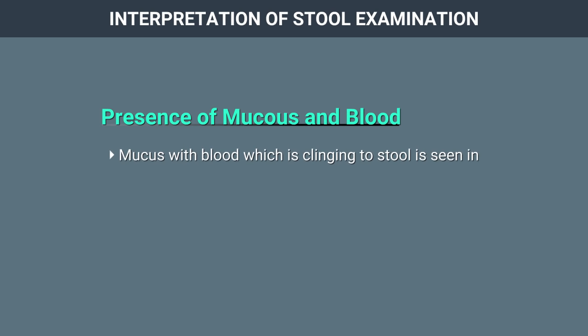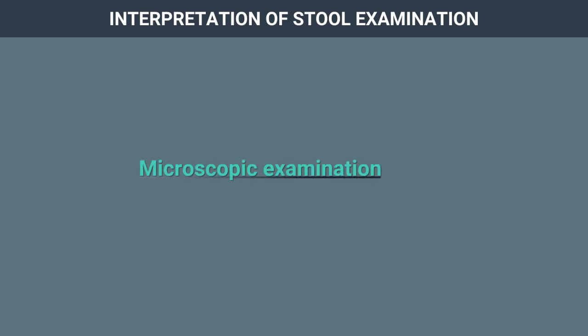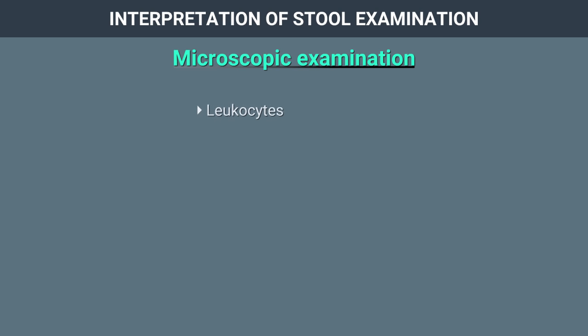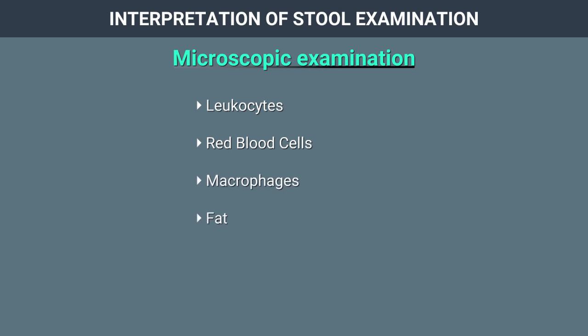Mucus with blood clinging to stool may be seen in malignancies of the colon and inflammatory lesions of the rectal canal. Microscopic examination is done to look for the presence of leucocytes, red blood cells, macrophages, fat, ova, cysts, and other microorganisms.